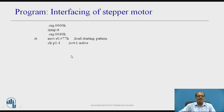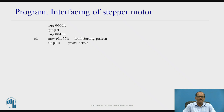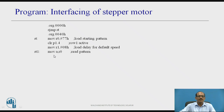Program: .ORG 00H, SJMP ST, .ORG 0040H. Move R0 immediate 77H — load the starting pattern, meaning one port line of the stepper motor is made 0. Clear P1.4 — row 1 is active — to check whether switch S1 or S2 is pressed. Move R1, 08H — load delay for default speed.